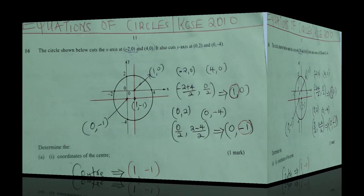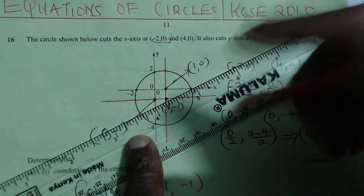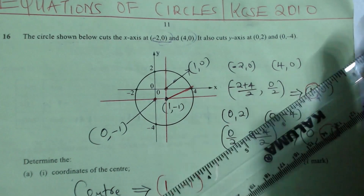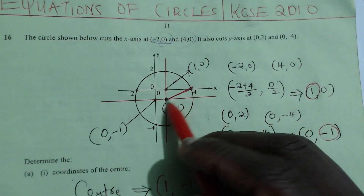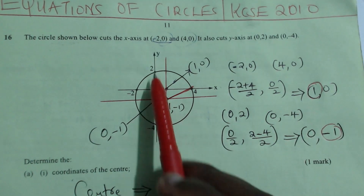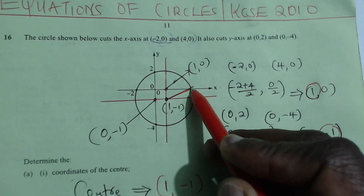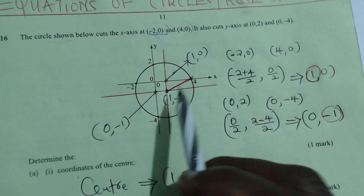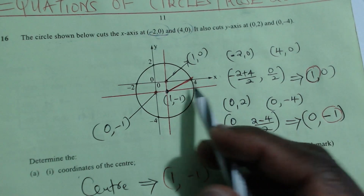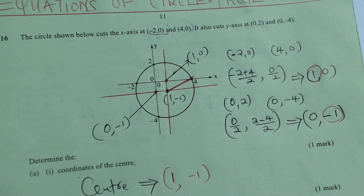Now we can find the radius. To get the radius, we simply join any point on the circumference to the center of the circle. I will join the point 4, 0 on the circumference to the center. The magnitude — the distance of that line — will give us the radius. So I'll use the center at 1, negative 1 and the circumference point at 4, 0.